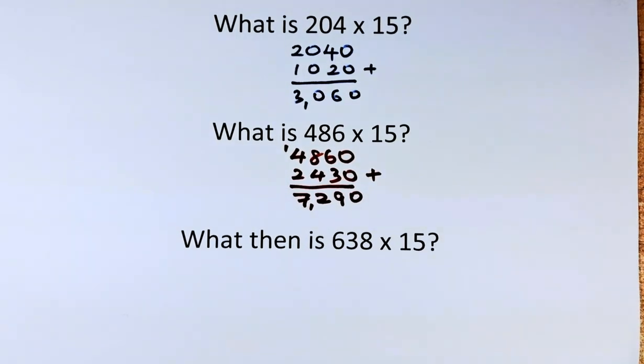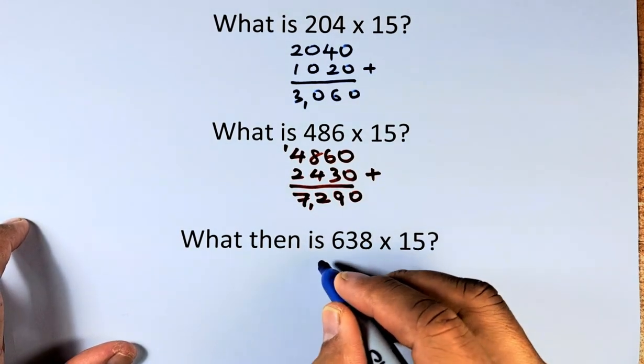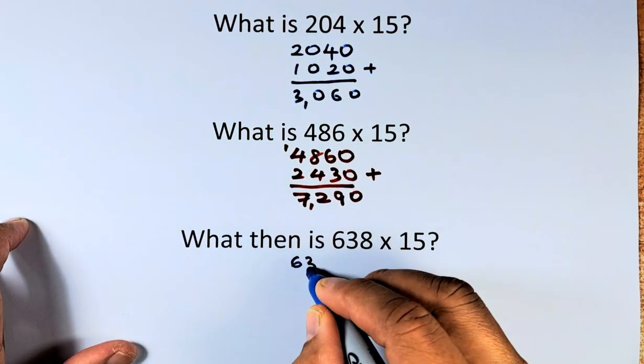Now for the last example: 638 multiplied by 15. We should know what to do now. We add 0 to 638, so it becomes 6380.